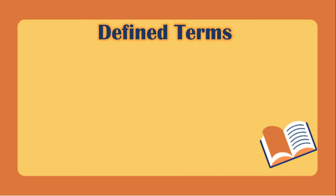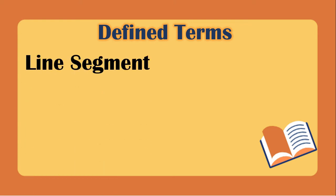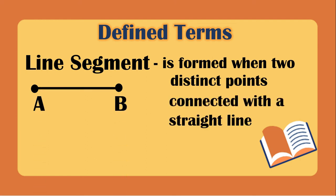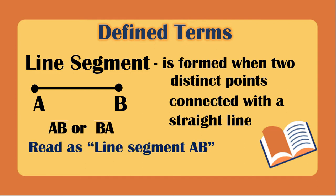The first defined term is the line segment. It is formed when two distinct points are connected with a straight line, so it has two endpoints and cannot be extended to the left or to the right. We name this as line segment AB or line segment BA.